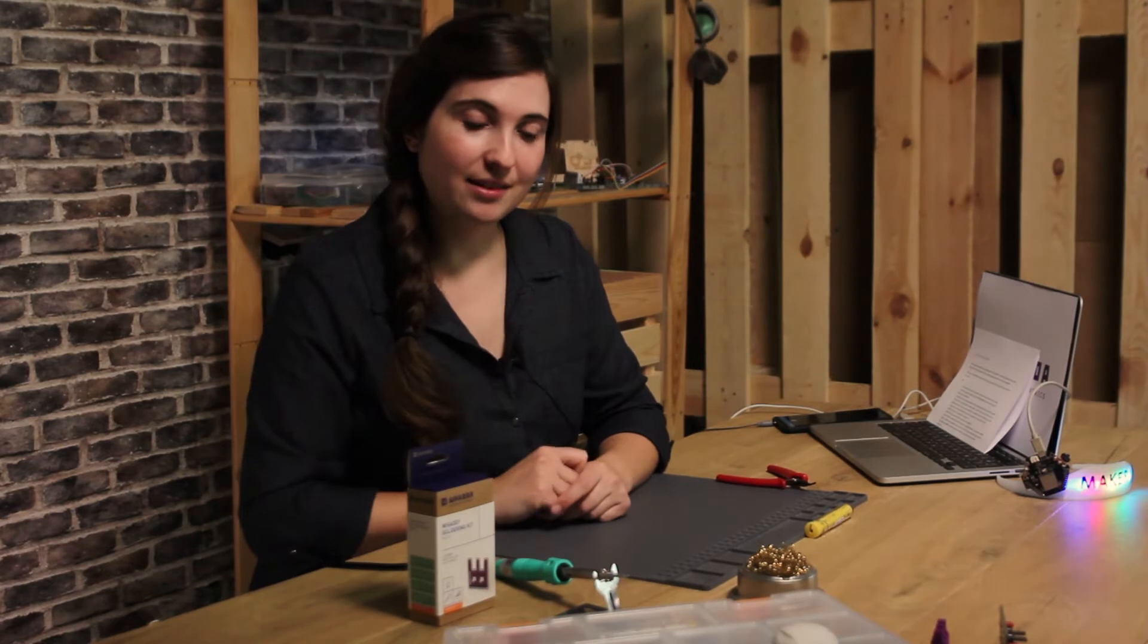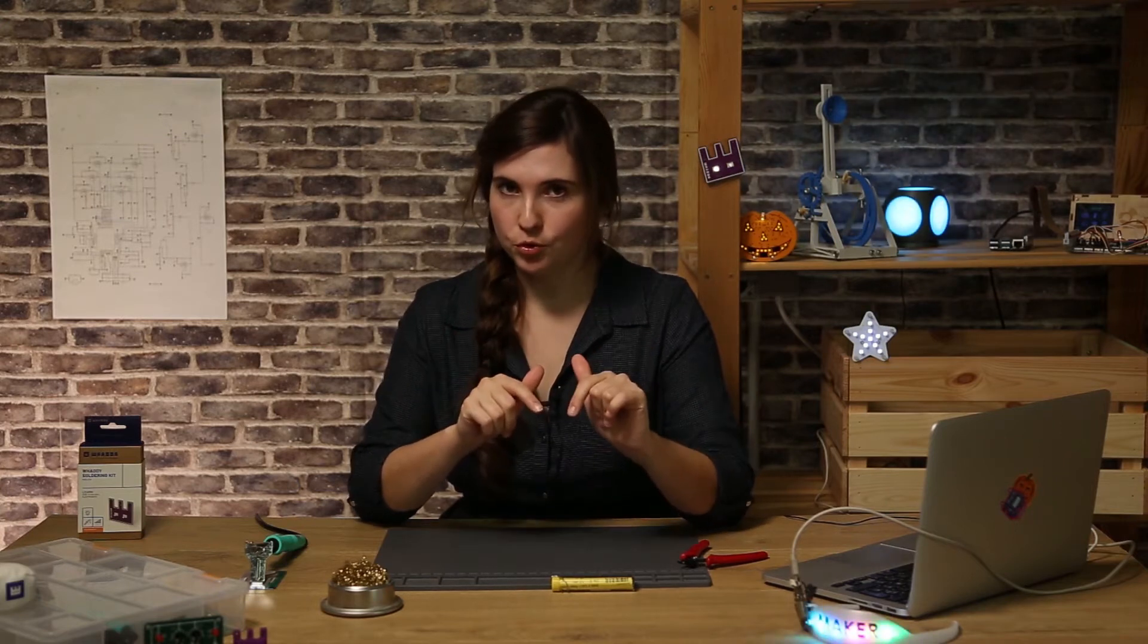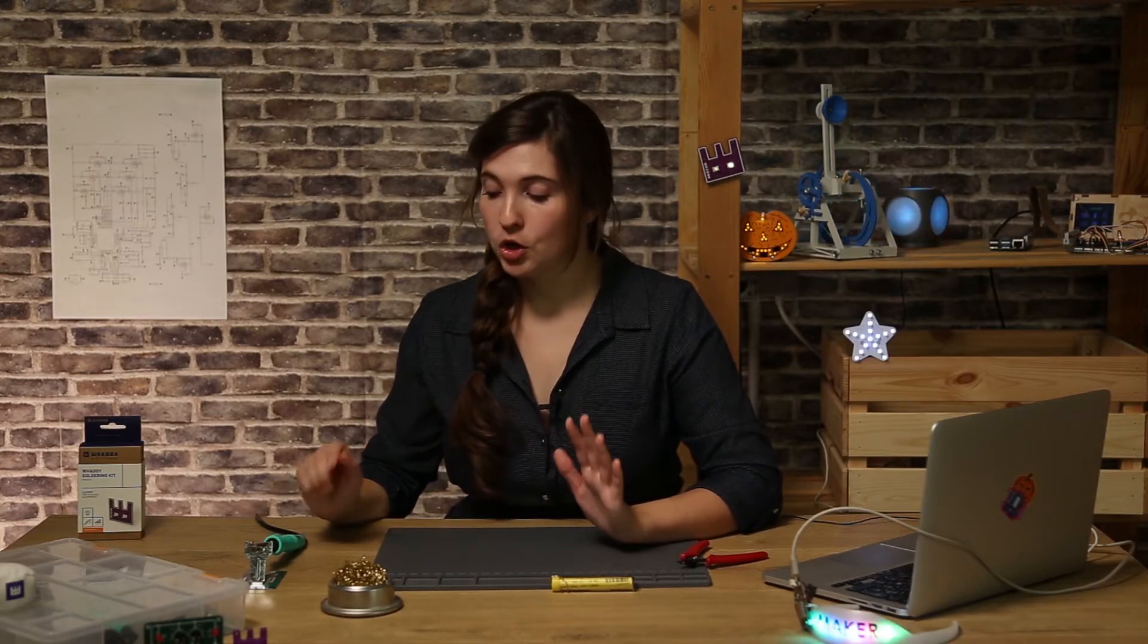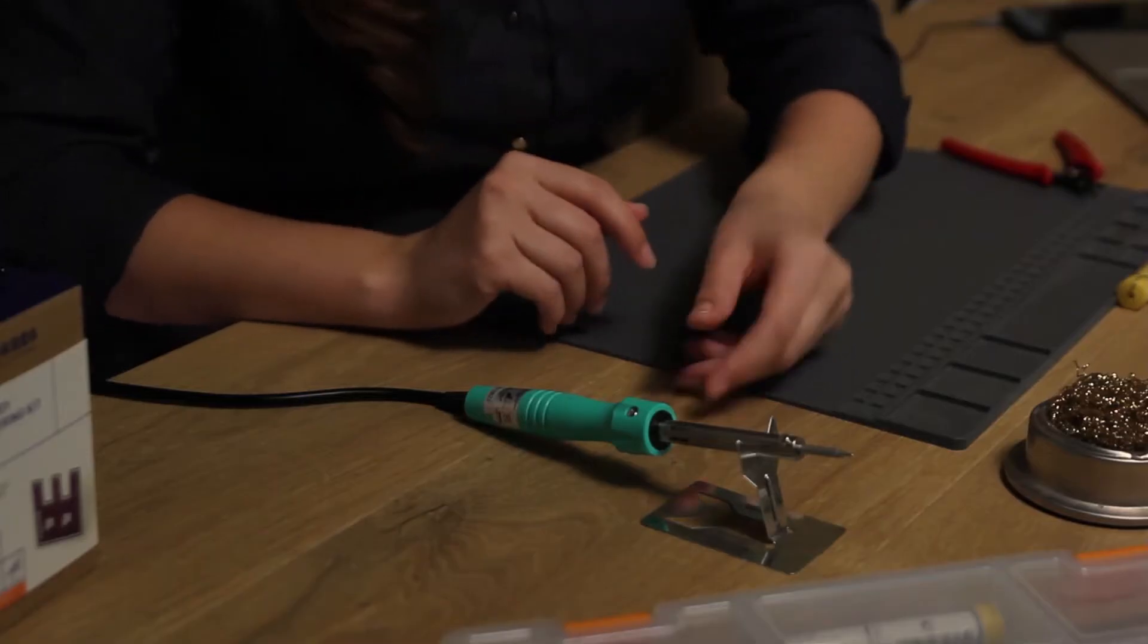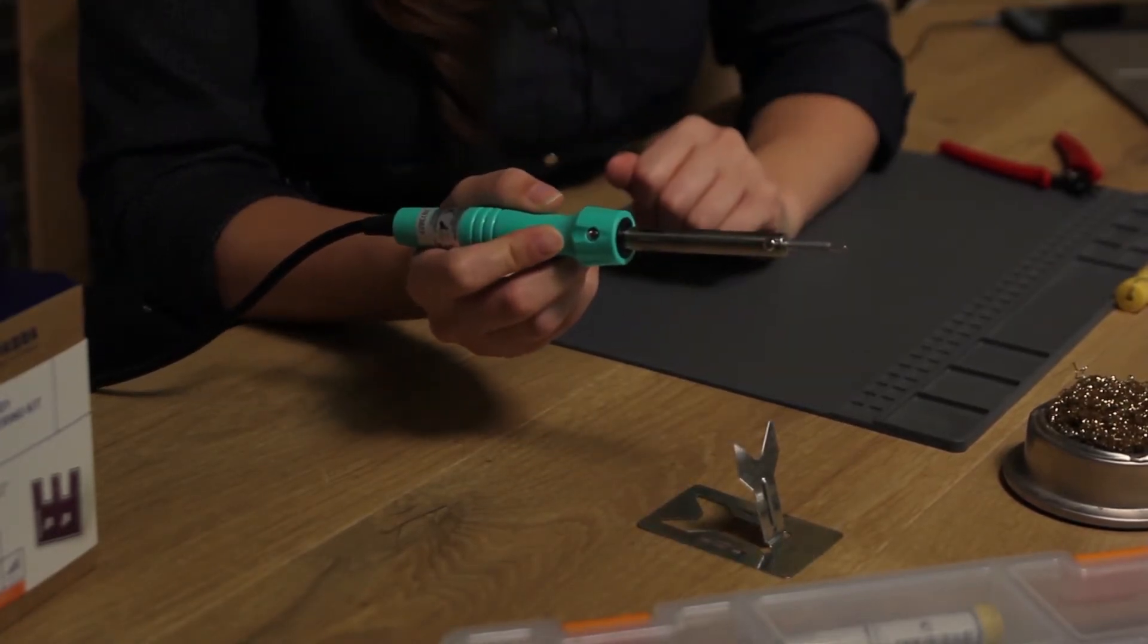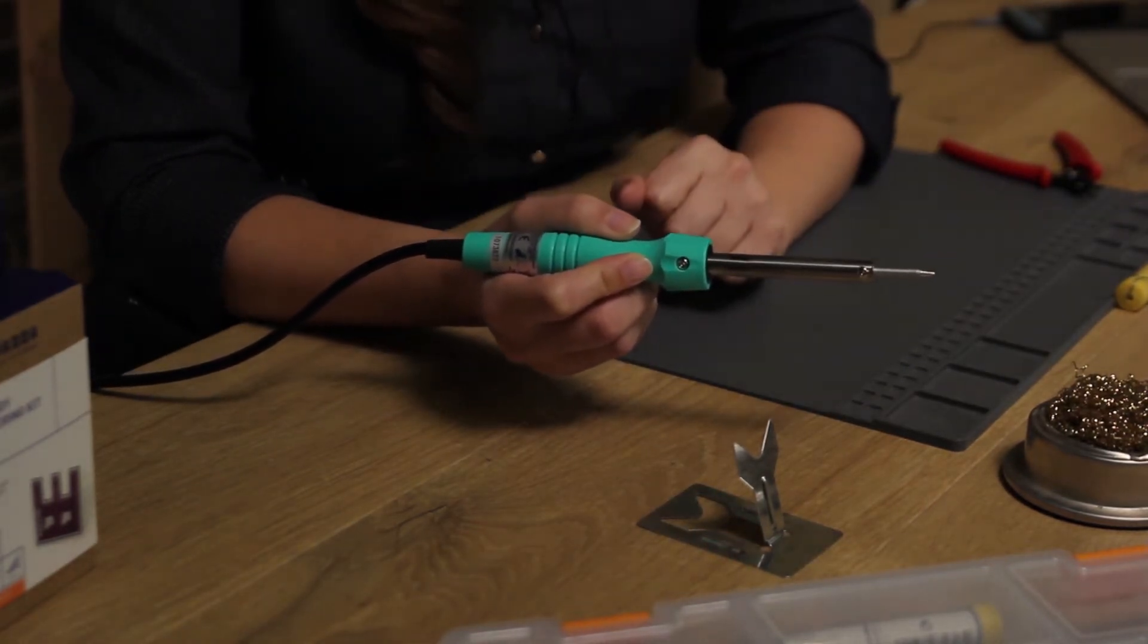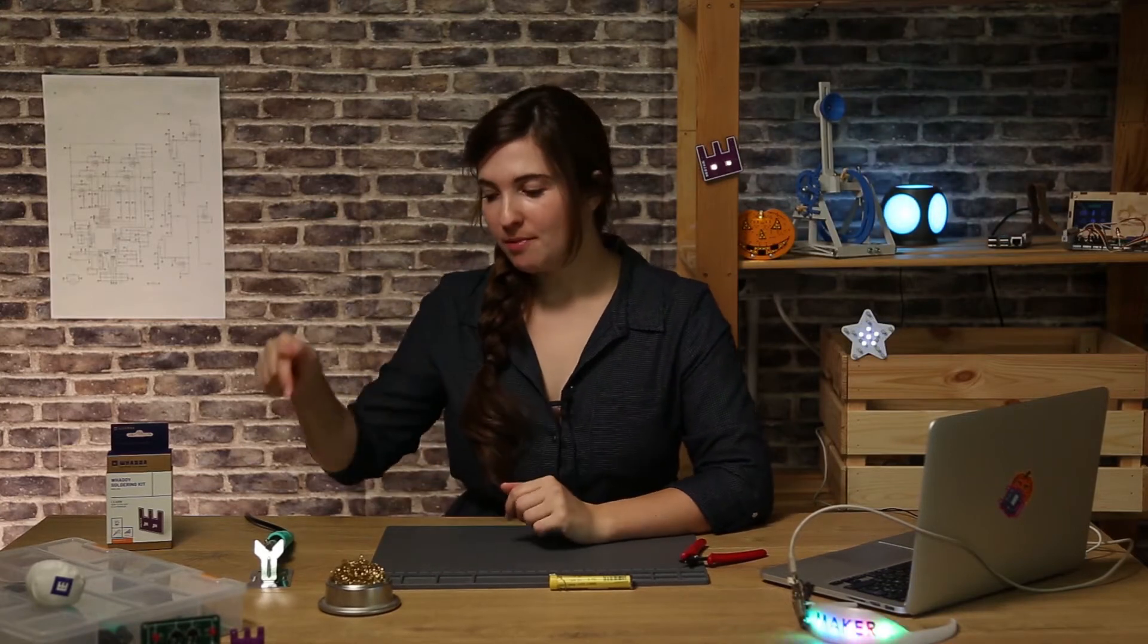Now if you're right-handed place your soldering iron on the right side and if you're a lefty place it on the left side. Now before we get started let me explain some important safety rules. To heat up the solder your soldering iron will need to heat up to about 300 degrees. So we need to be very careful. Always take your soldering iron like this and place it back in the solder holder. Never ever touch the iron part. Alright, let's get to it. Start by plugging in your soldering iron so it can start heating up.